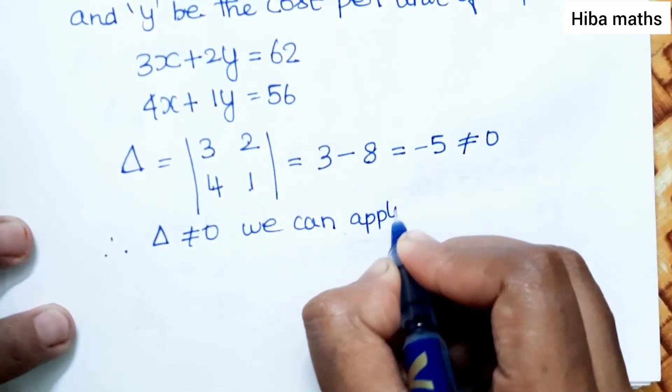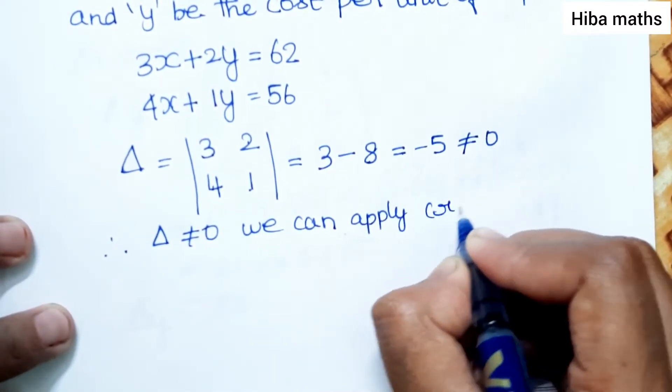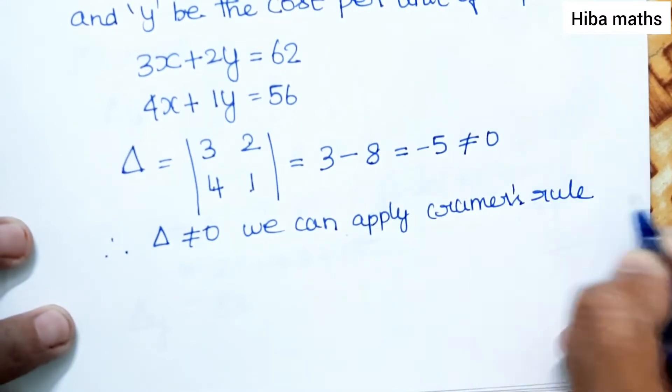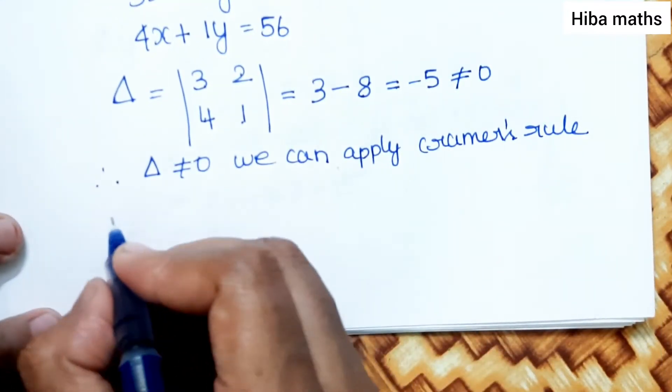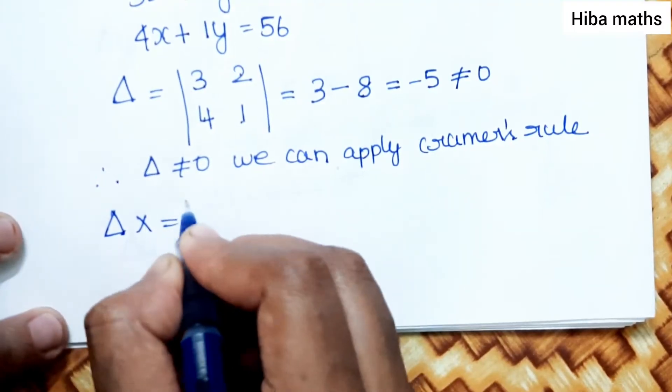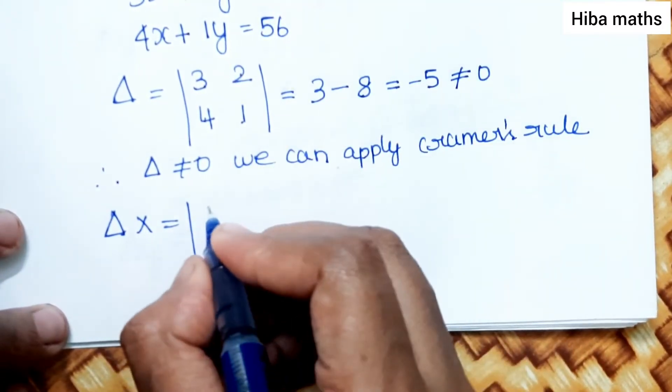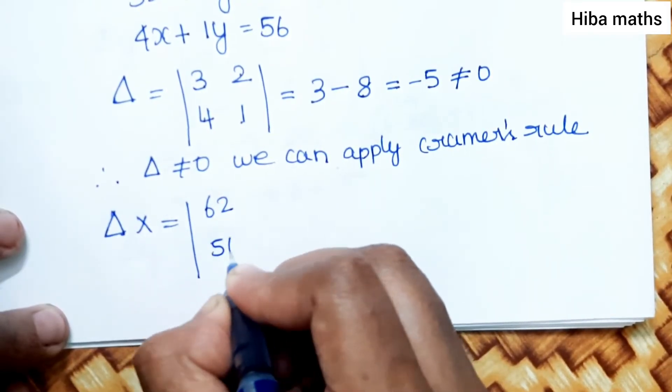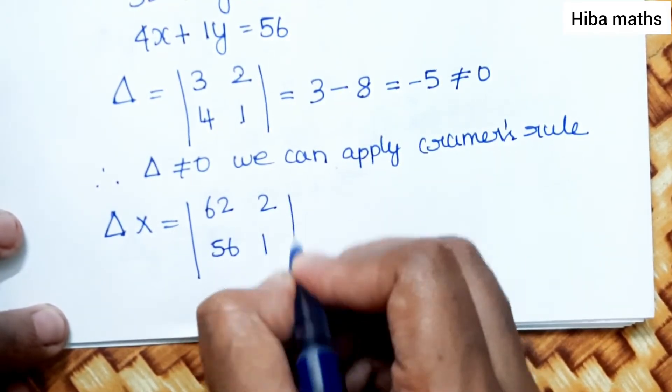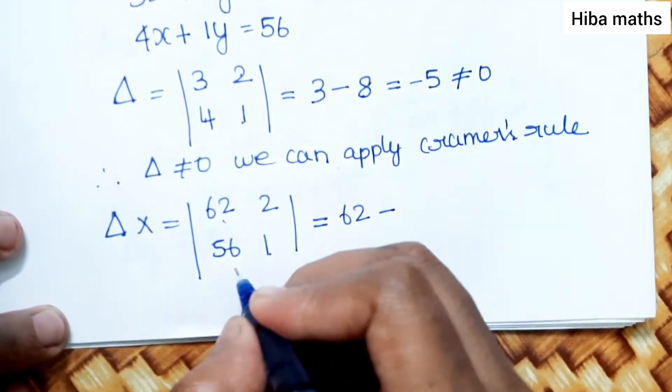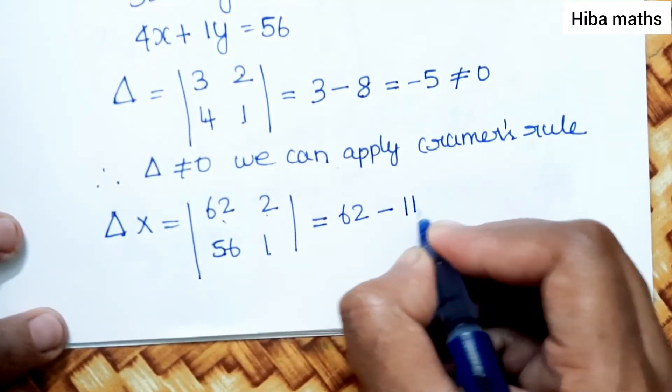Now applying Cramer's rule, delta x equals 62 times 1 minus 56 times 2, which equals 62 minus 112.